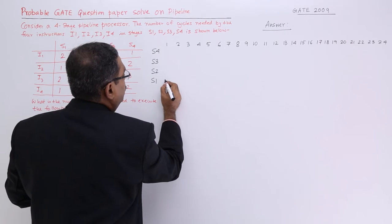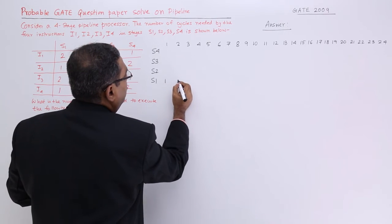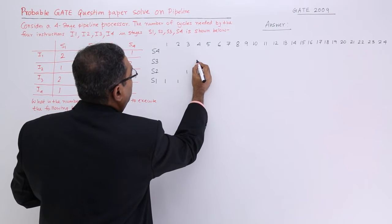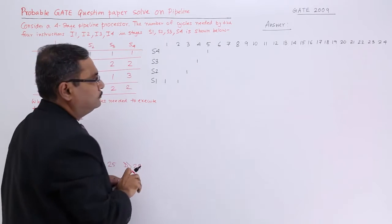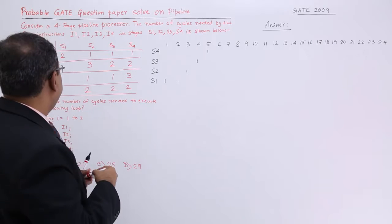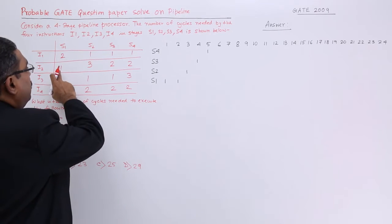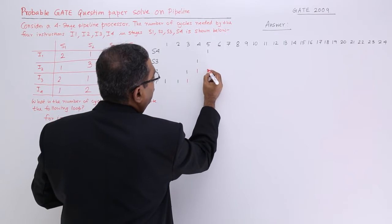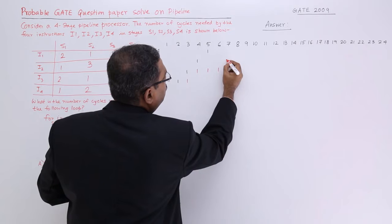So instruction number 1: 2, then 1, and then 1, 1. Then instruction I2 will come 1, 3, 2, 2. So 1, 3, 2, 2.